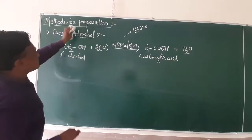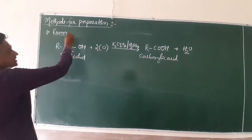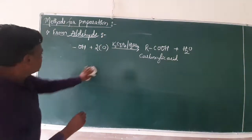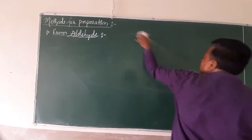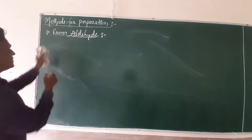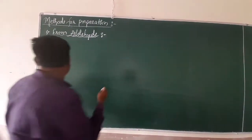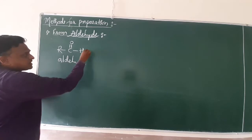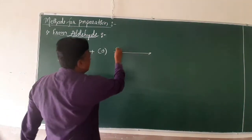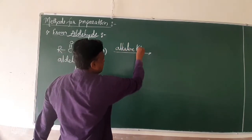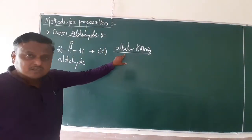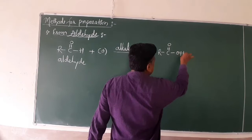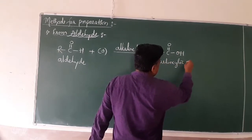Apart from alcohol, let us now look at preparation of carboxylic acid using corresponding aldehydes. This is a single-step reaction. The general formula of an aldehyde is RCHO. When an aldehyde undergoes oxidation using alkaline KMnO4 — potassium permanganate, which is also an excellent oxidizing agent — it converts into RCOOH, which is carboxylic acid.